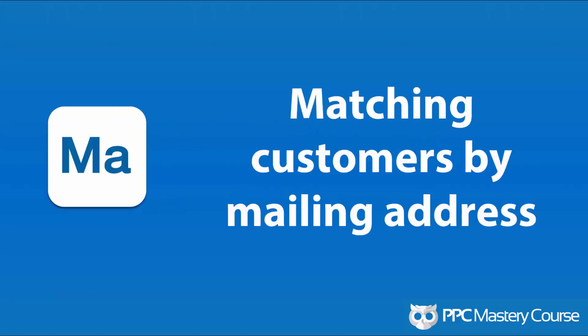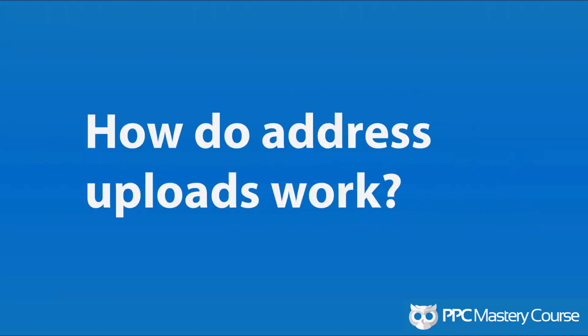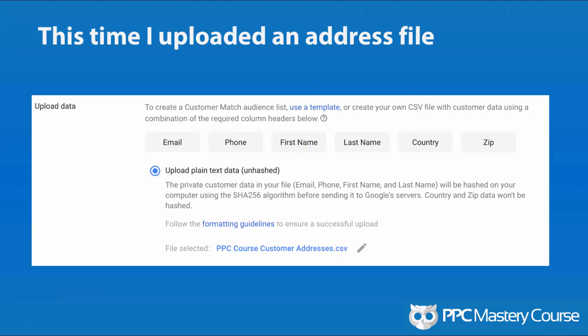I also went ahead and decided to match customers by mailing address as well. Address uploads are a little bit more complex than email address uploads. It's the same area where you upload your data, but you have to have columns with specific titles — in this case: first name, last name, country, and zip. I left out email and phone — just did last name, first name, country, and zip, then put it in my CSV file.